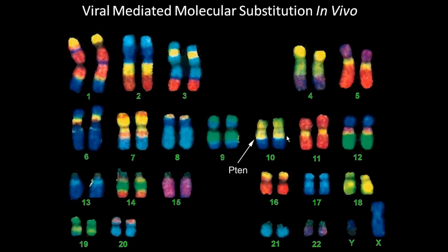One goal in my laboratory is to understand the neurobiological basis of complex behaviors. In humans, disease-causing mutations can result in complex behavioral changes. For example, mutations in the gene PTEN, found here on chromosome 10, can cause some forms of autism with macrocephaly.